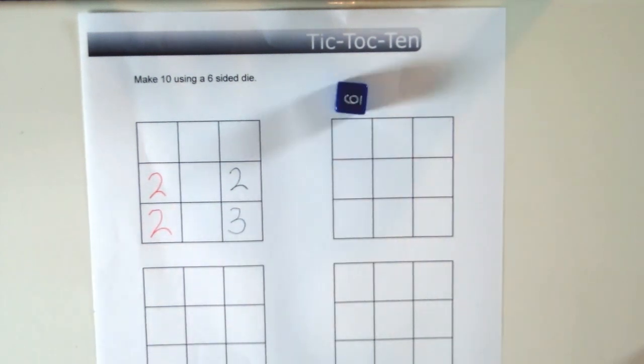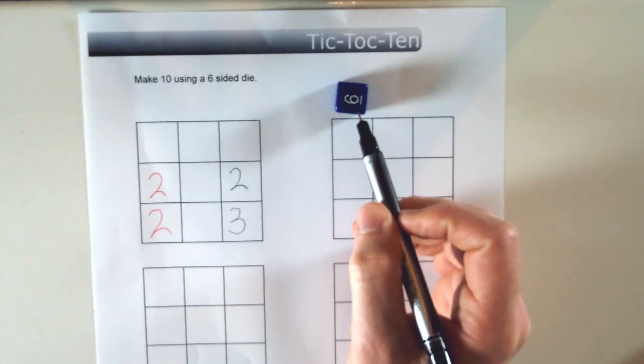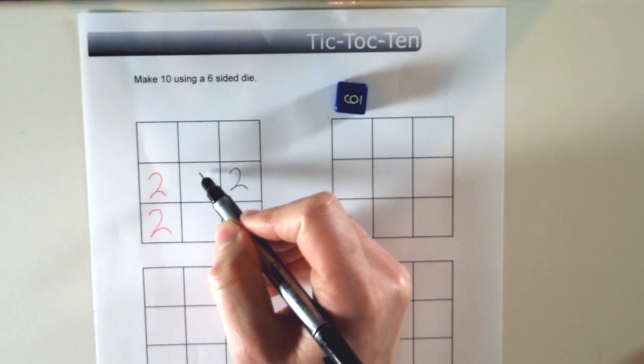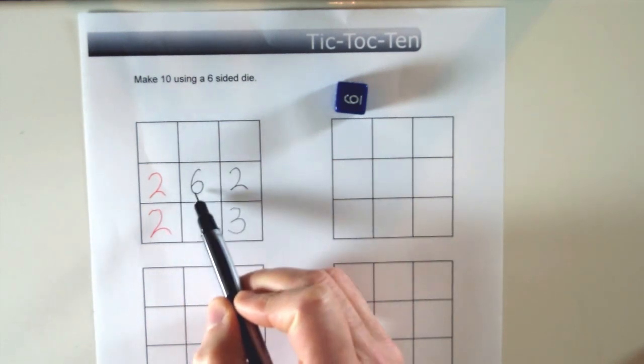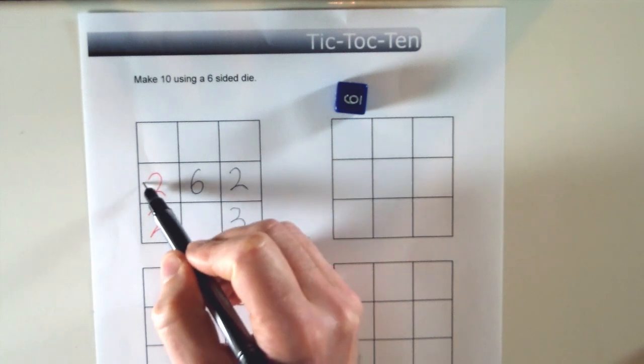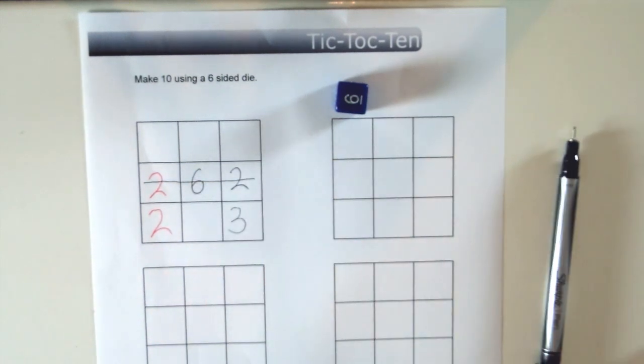Player 1 rolls a 6. And because player 1's rolled a 6, they already know they can put it there. And 2 plus 6 equals 8 plus 2 equals 10. So player 1 has won the game. And you can see how quick it is to play.